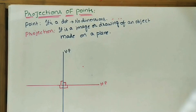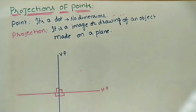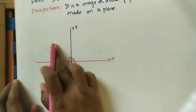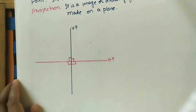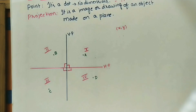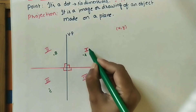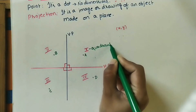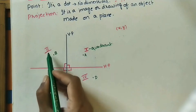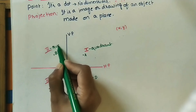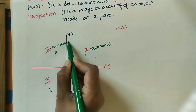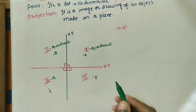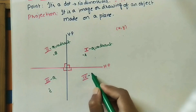These two planes divide the entire area into four parts: first, second, third, and fourth. There are four quadrants. This is the first quadrant (Q1), this is the second quadrant (Q2), this is the third quadrant (Q3), and this is the fourth quadrant (Q4).